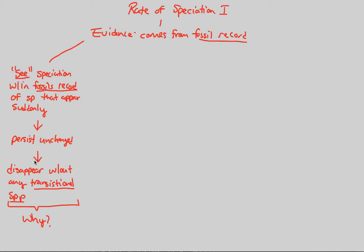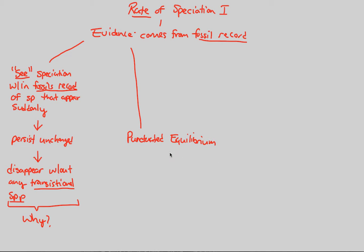We can answer these questions by looking at two different models of speciation and specifically the rate of speciation. Remember, we're trying to figure out why speciation happens so fast, stays so long, and then disappears so suddenly without any transitional species. The first mechanism is called punctuated equilibrium, which we briefly covered in Darwinian evolution but will now expand upon.